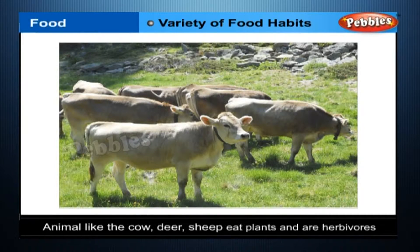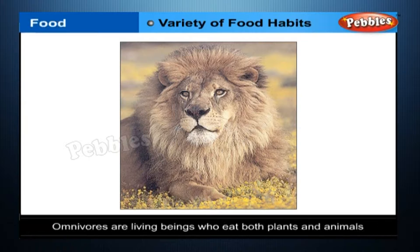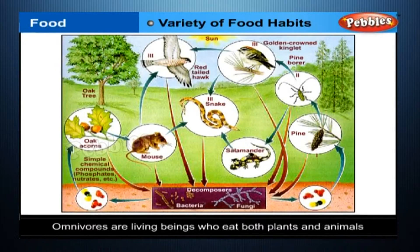Animals like the cow, deer, sheep, and elephant eat plants and are therefore herbivores. Some animals like the lion and tiger eat other animals — these are the carnivores. There is another category, the omnivores. These are living beings who eat both plants and animals, like humans, crow, squirrels, and cockroach.